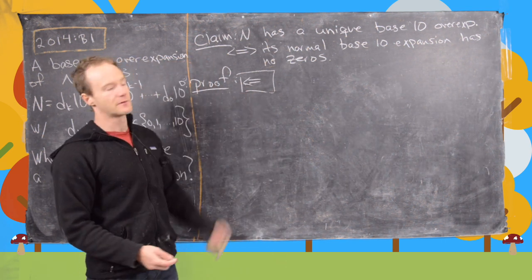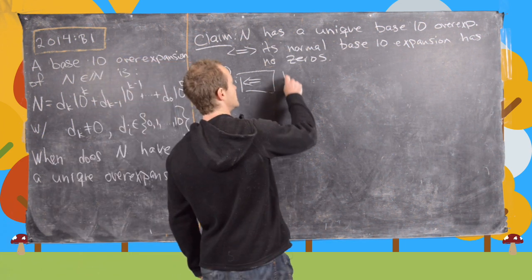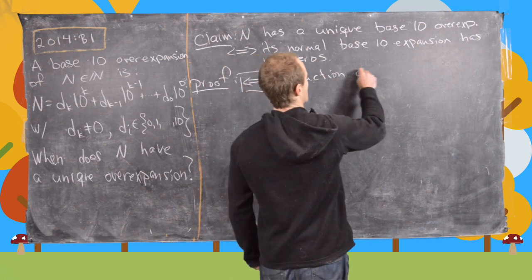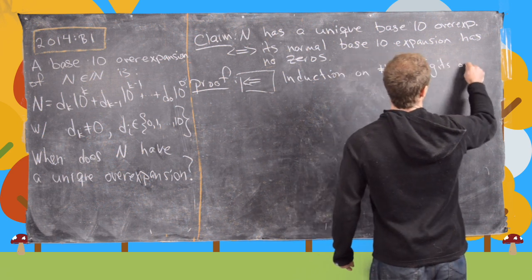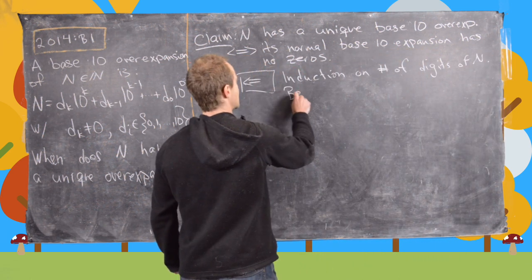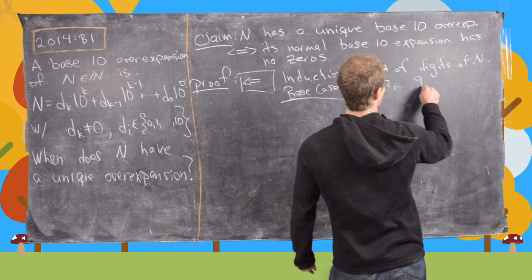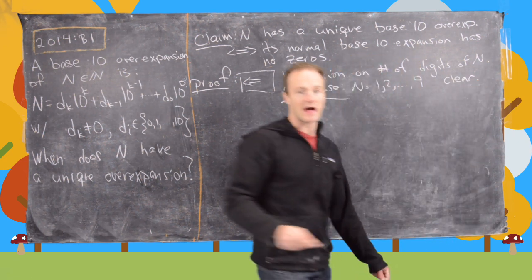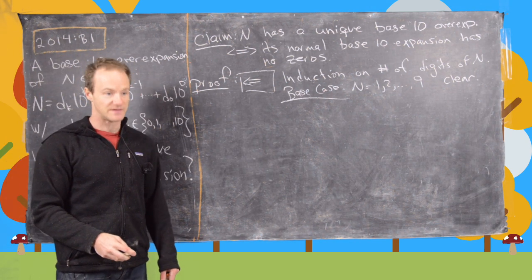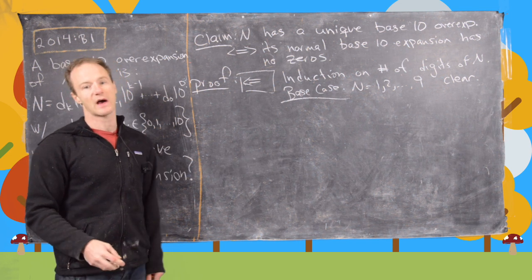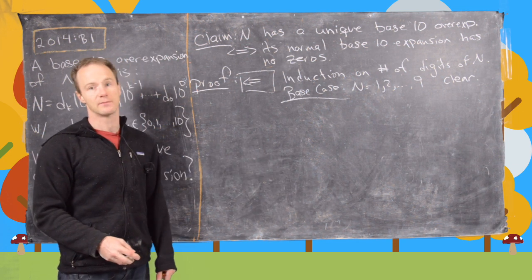Now we prove the reverse direction by induction on the number of digits of n. The base case, n in {1, 2, ..., 9}, is clear: there is only a ones place, so there's nowhere lower to use the digit 10, meaning there is only one possible over-expansion.